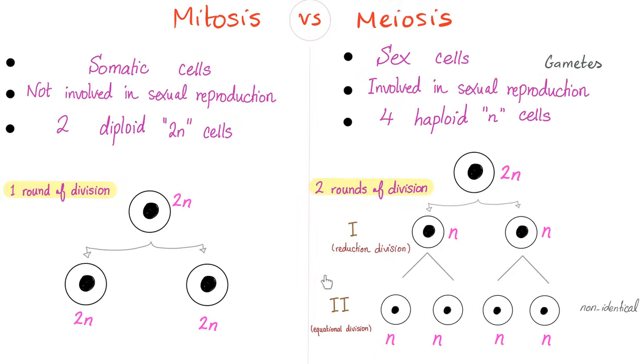Mitosis versus meiosis, what a clean comparison. Mitosis happens in somatic cells, but meiosis in sex cells, gametes, your ovaries and testicles. Mitosis is not involved in sexual reproduction, but meiosis, of course, is involved in sexual reproduction.